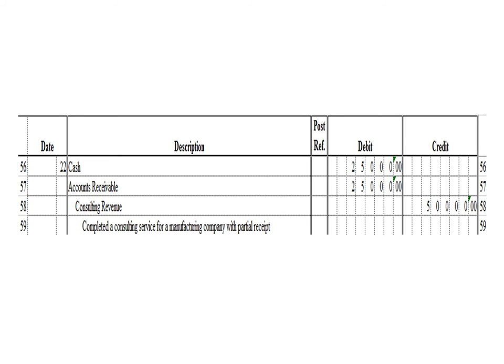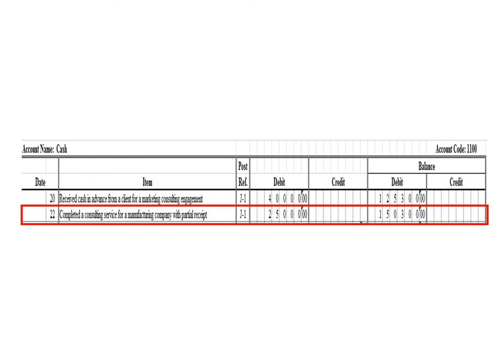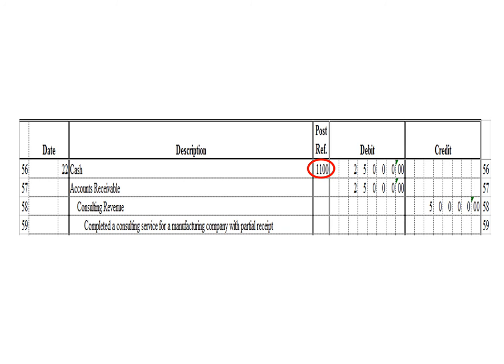Next transaction: a debit to cash for 25,000 pesos, a debit to accounts receivable 25,000 pesos, and a credit to consulting revenue 50,000 pesos. To post the first debit entry in the cash ledger, we write date 22, description: completed a consulting service for a manufacturing company with partial receipt, posting reference J1. Under the debit column, write 25,000 pesos. The balance is 150,300 pesos — previous debit balance 125,300 plus 25,000 debit. As of March 22, the cash ledger balance is 150,300 debit. After posting, write posting reference 1100.